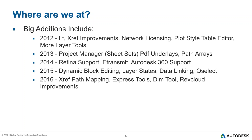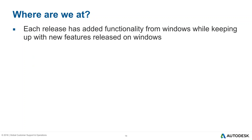XRef path mapping is a key feature for mixed offices — if you have a Mac and someone has a Windows computer, they have different paths to the same server. Windows uses drive letters, Mac uses volumes. XRef path mapping equates your Windows path with your Mac path, so both of you can work in the same external references without constantly relocating them. Each release has added functionality from the Windows side, and new features released on Windows tend to follow on Mac as well.